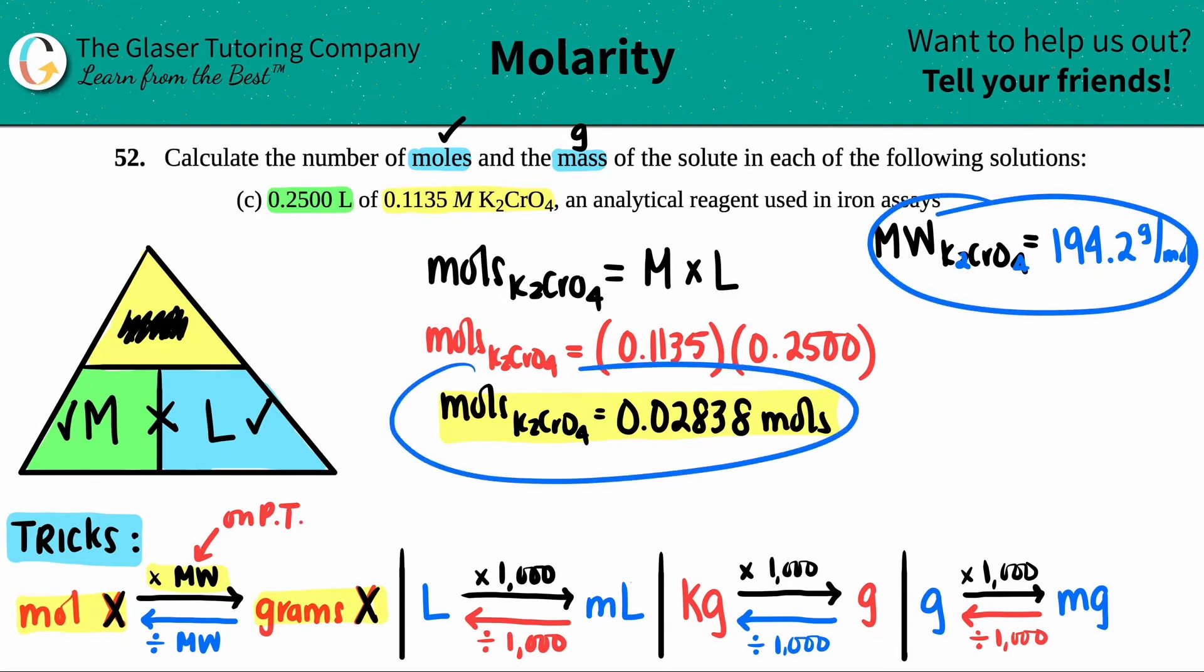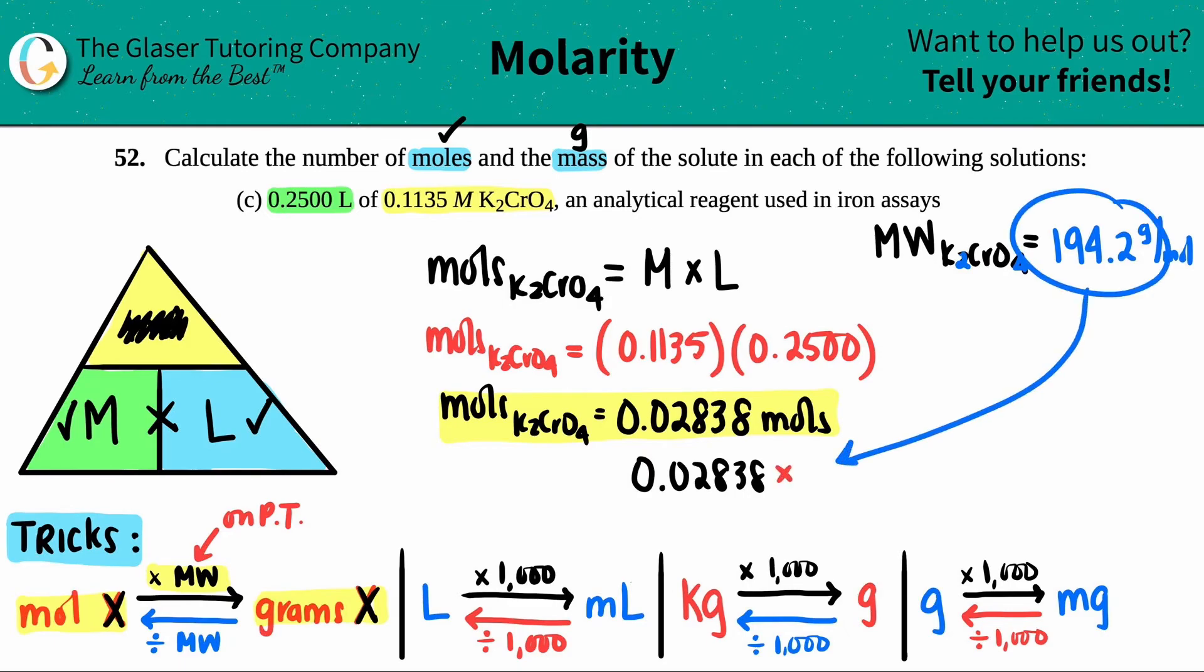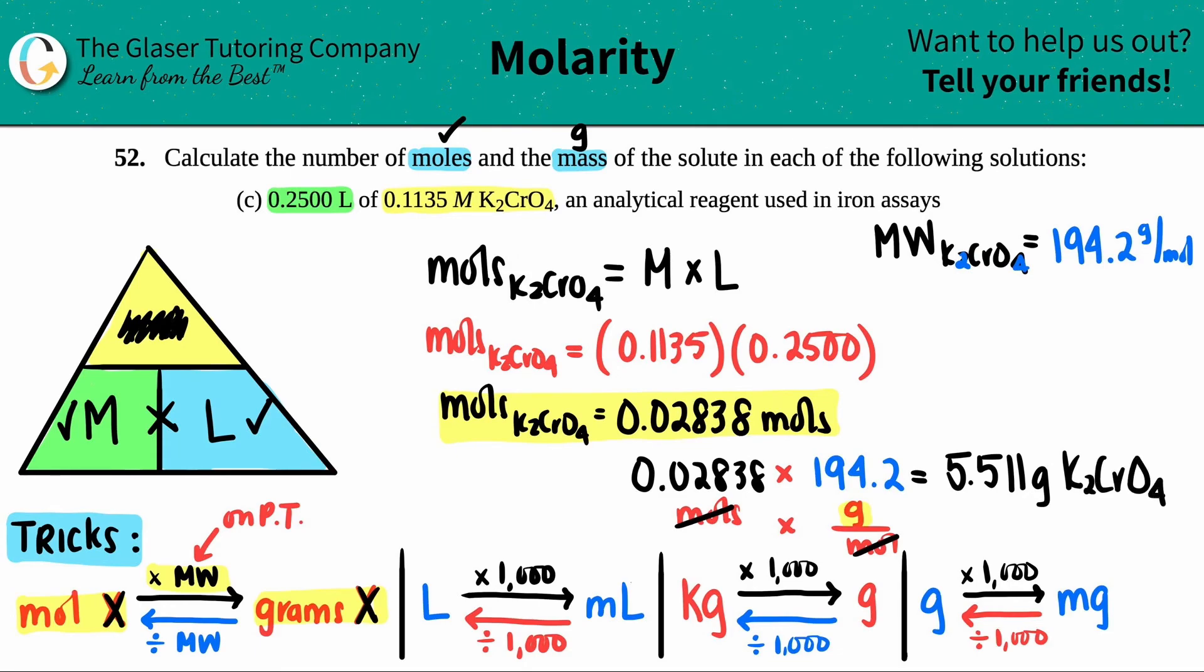I'm going to use this and this number. I'm going to multiply them together. So I'm going to take 0.02838 and times by 194.2. This was moles. This was grams per mole. I'm multiplying them by each other. The moles cancel, and that's why you just have the unit of grams. I need four sig figs, so 5.511, and that's grams of the potassium chromate, K2CrO4. And that's your second answer.